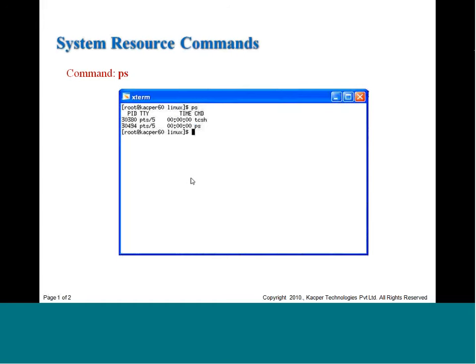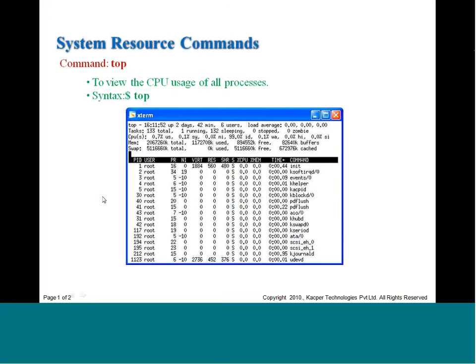The ps display is a passive snapshot at a point in time. To view system resources on a continuous basis, use the top command. Just type top and it keeps running, updating continuously. Press Q to quit. The top output shows how long the system has been up — for example, 2 days and 42 minutes — and the total number of users (6) and tasks (133, with 1 running and 132 sleeping).